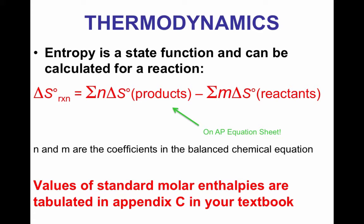Calculating entropy can be calculated in a manner very similar to how we calculated delta H when we looked at enthalpy and calorimetry and thermochemistry before. So to find the change in entropy of a reaction, the delta S reaction, you take the sum of the delta S of the products minus the sum of the delta S of reactants, and the n and the m are the coefficients in the balanced chemical equation.